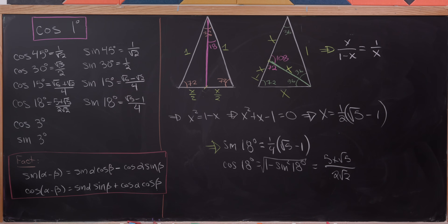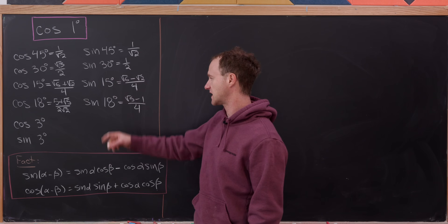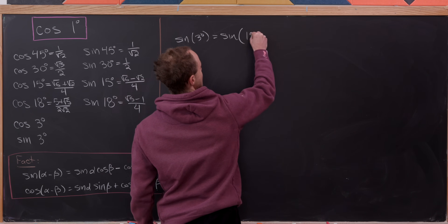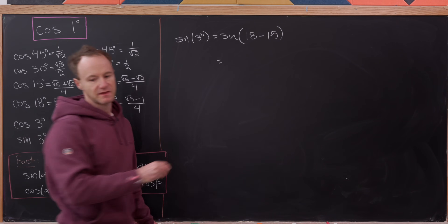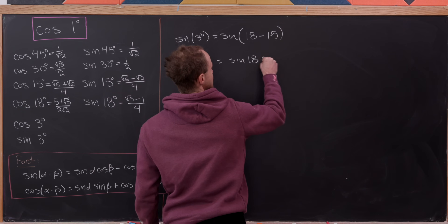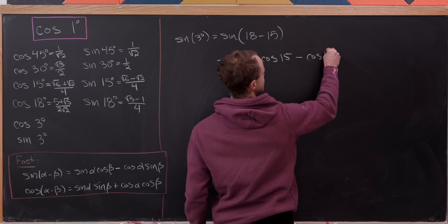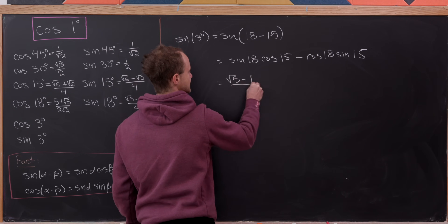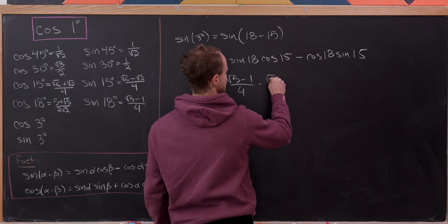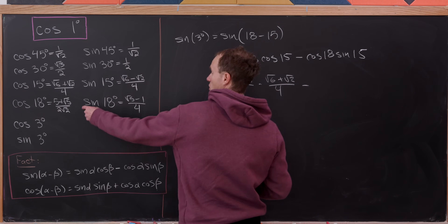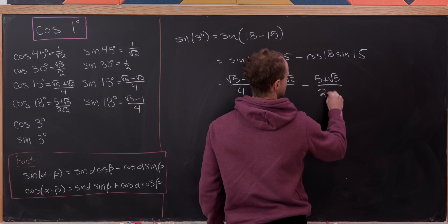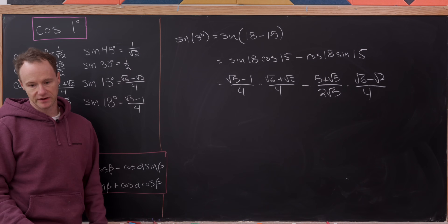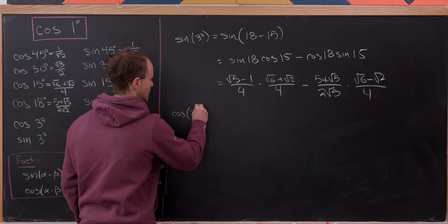Now we're ready to calculate cosine and sine of 3 degrees using these last two sets of facts. We write sine of 3 degrees as sine of 18 minus 15, and applying the difference formula gives sine 18 times cosine 15 minus cosine 18 times sine 15. Substituting our values: that's root 5 minus 1 over 4 times root 6 plus root 2 over 4, minus 5 plus root 5 over 2 root 2, times root 6 minus root 2 over 4.